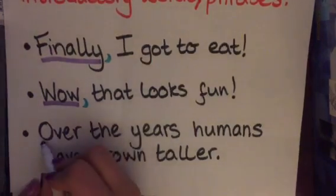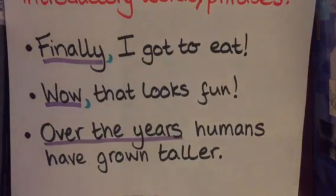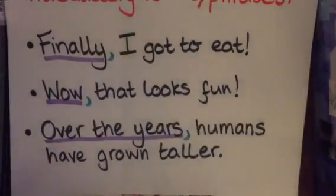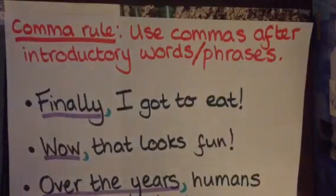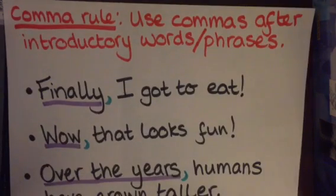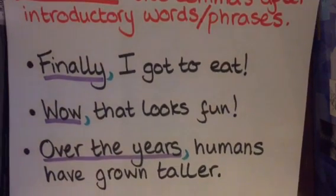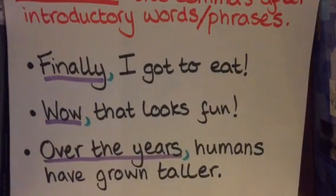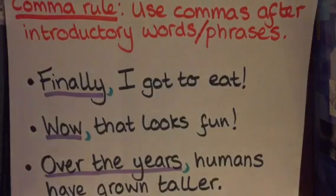So 'over the years' is our introductory phrase — more than one word — and we put a comma after that. These introductory words or phrases are transitions at the beginning of a sentence. They add something to the sentence, but if they were removed, the sentence would still make sense. They have to have a comma after them.